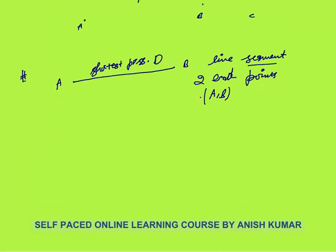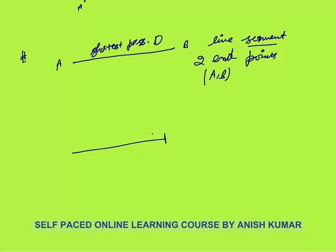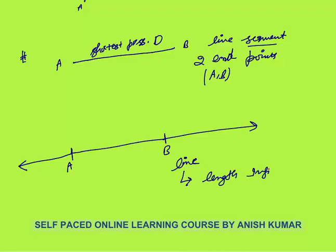Now what is a line? If you extend the line segment AB in both directions in a straight manner, it will become a line. The length of a line is infinite because a line is a line segment extended in both directions infinitely. So a line does not have any finite length. A line segment is a part of a line.